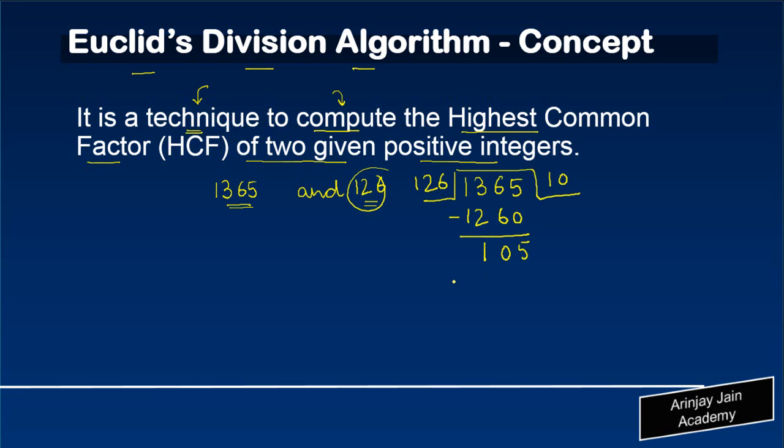In Euclid's division algorithm, once you've done the subtraction, whatever is the divisor which was there in the previous step is now to be divided by the remainder. So I divide 126 by 105. This goes one time, I write this as 105 and I subtract 105 from 126 and I get 21.